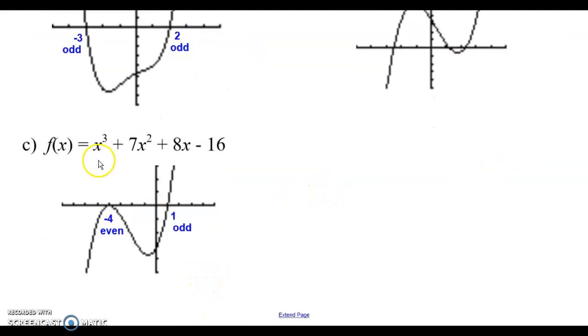All right, then if you were to go, I put one more in here just for extra. I've got x to the third plus 7x squared plus 8x minus 16. When you graph this one, you're going to notice that at negative 4 and at 1, you're touching the x-axis. But here's the difference. At negative 4, you notice it's touching and turning. So that means I have even multiplicity. At 1, we cross, so that would have odd multiplicity.